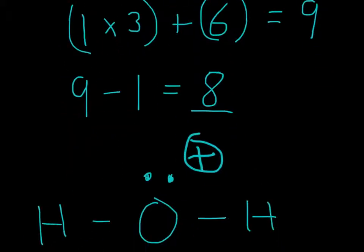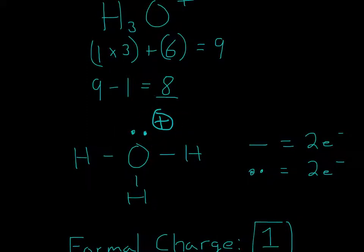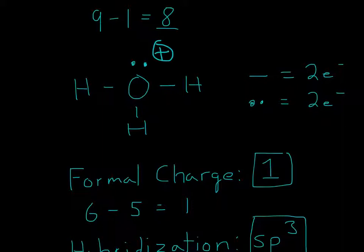So our actual Lewis structure will look like this. Now we have to put a plus charge because of the formal charge of this oxygen. For formal charge, the first thing is the group number, which will be 6, since oxygen is in group 6. Then we subtract it from what we count here: 1, 2, 3, 4, 5. So 6 minus 5 equals 1. The formal charge is 1, so we put plus 1.